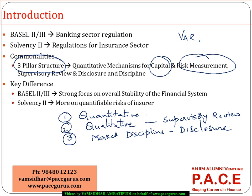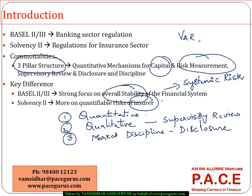From the key difference standpoint, Basel 2's strong focus is more on the overall stability of the banking system, because systemic risk is very much inherent in the banking sector. Whereas when we talk about the insurance sector, rather than systemic risk, we see more and more of individual insurers becoming insolvent. So the risks specific to an insurer are the major focus under the Solvency 2 mechanism, because there is not that much chance of the whole system failing together in the insurance industry.